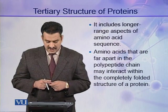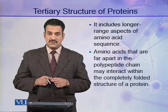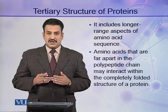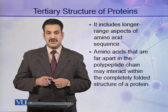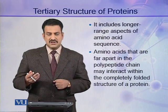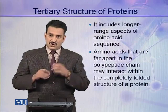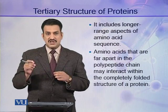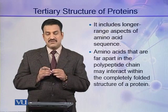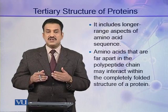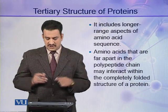For example, amino acids that are far apart in the polypeptide chain may interact within the completely folded structure of a protein. If a protein contains a cysteine amino acid at position 5 and a second cysteine at position 90, they are very far from each other. But when the polypeptide folds into its tertiary structure, cysteine 90 may come close to cysteine 5, and they may form a disulfide linkage. In this way, weak and covalent interactions are made between quite distant amino acid residues.